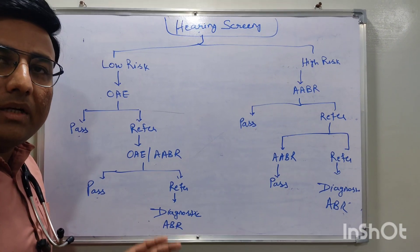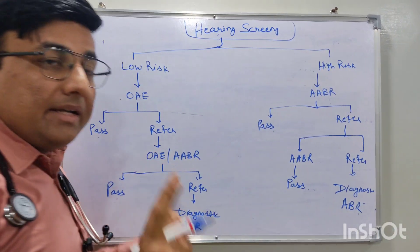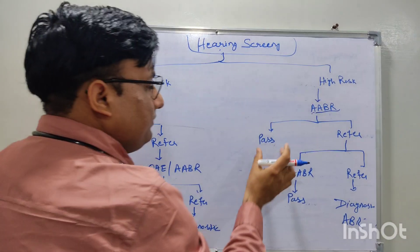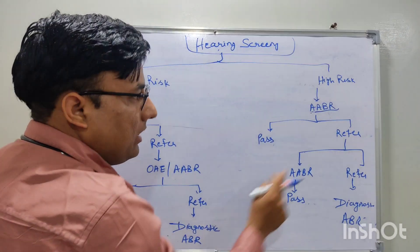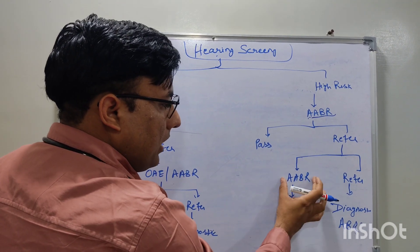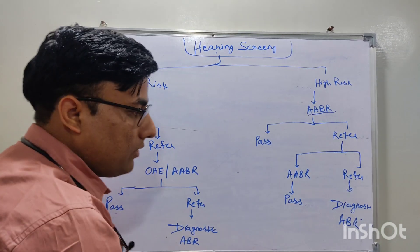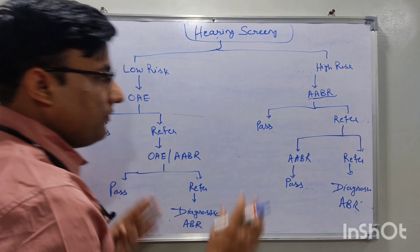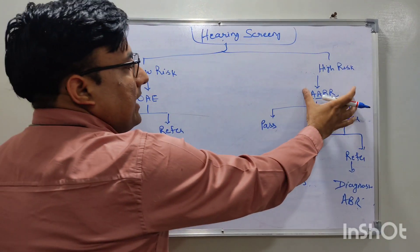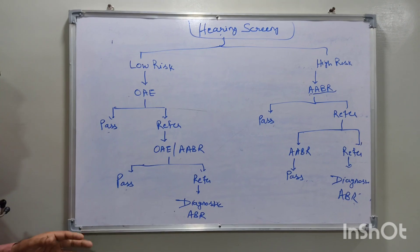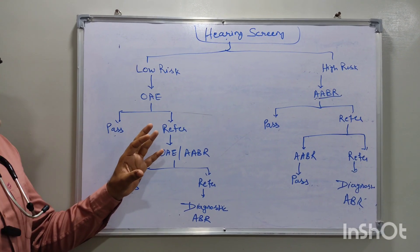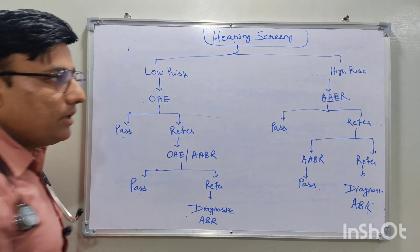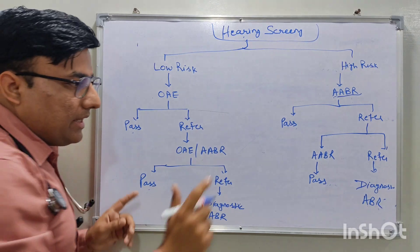For high-risk babies — admitted to the NICU, sick, or admitted for more than five days — always do automated ABR, not OAE, for screening. If automated ABR passes, nothing to be done. If it fails or is referred, do repeat automated ABR screening. If it still fails, the baby goes for diagnostic ABR. The key difference: low-risk babies use OAE for screening, high-risk babies must use automated ABR. OAE is for low-risk screening; automated ABR is for high-risk screening; diagnostic ABR is for diagnosis.